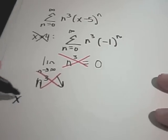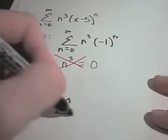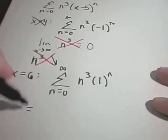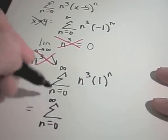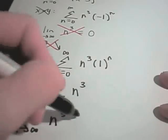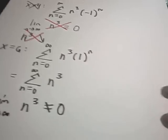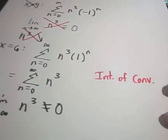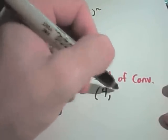Now checking x equals 6: plugging in gives the sum from n equals 0 to infinity of n cubed times 1 to the n. Since 1 to the n is just 1, this simplifies to the sum of n cubed, which diverges by the test for divergence — the limit as n goes to infinity of n cubed is not 0. So the interval of convergence is the open interval (4, 6), excluding both endpoints.